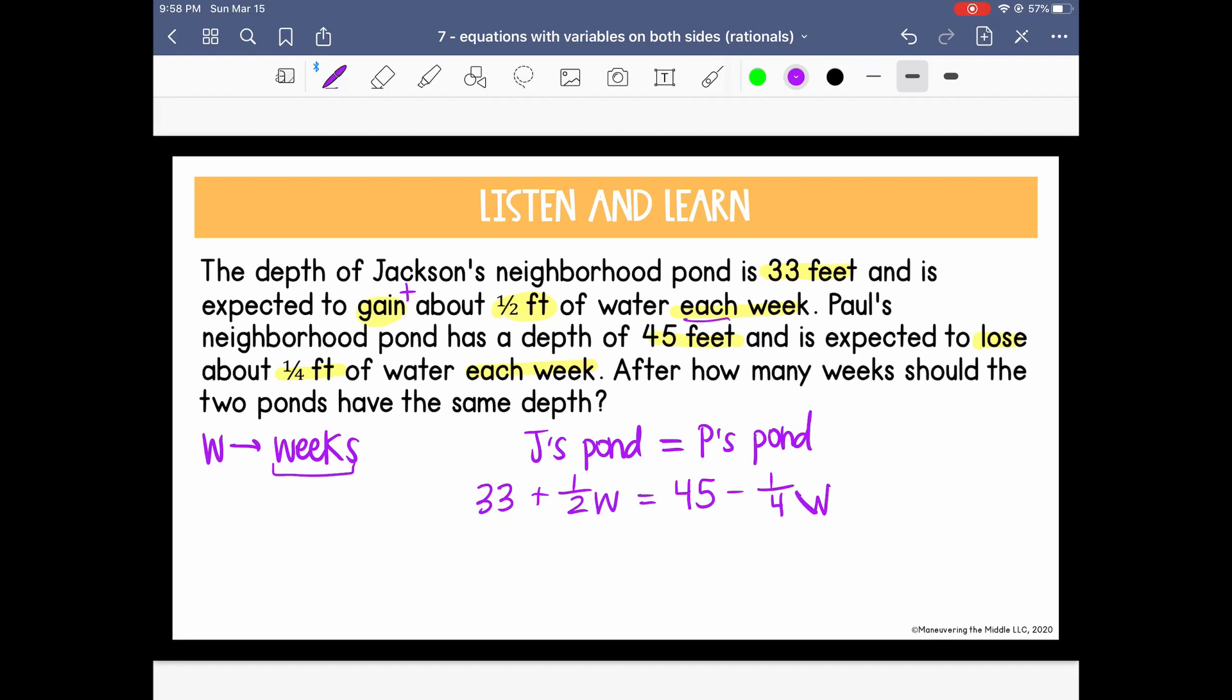Okay, so let's start solving. I'm going to collect my variables on the left. So I'm going to add 1/4 W to each side. So I have 33. One half is really the same as 2/4. So I know that when I add those fractions, I'll have 3/4 W. I'm going to run out of room here, so let's move it over here. Okay, so now we need to subtract 33 from both sides.